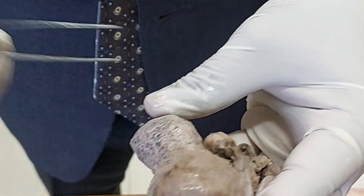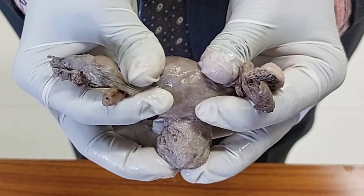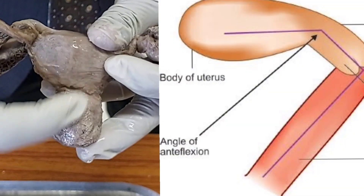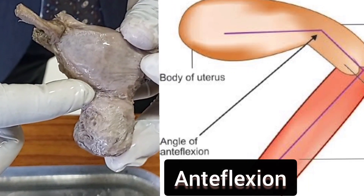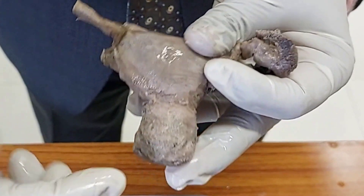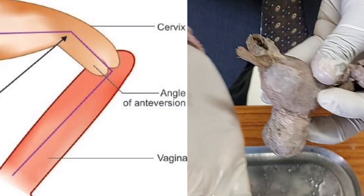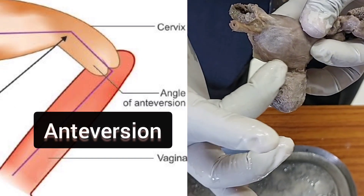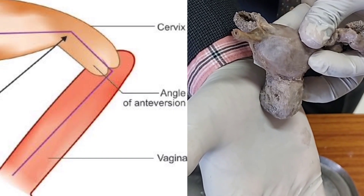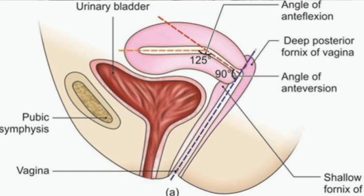Now you know the anterior and posterior parts. You have to hold the specimen in this way because there is angulation between the cervix and the body called anteflexion, which is about 125 degrees. There is also the vagina forming another angle called anteversion between the long axis of the uterus and the long axis of the vaginal wall. So the uterus is in the position of anteverted and antiflexed.